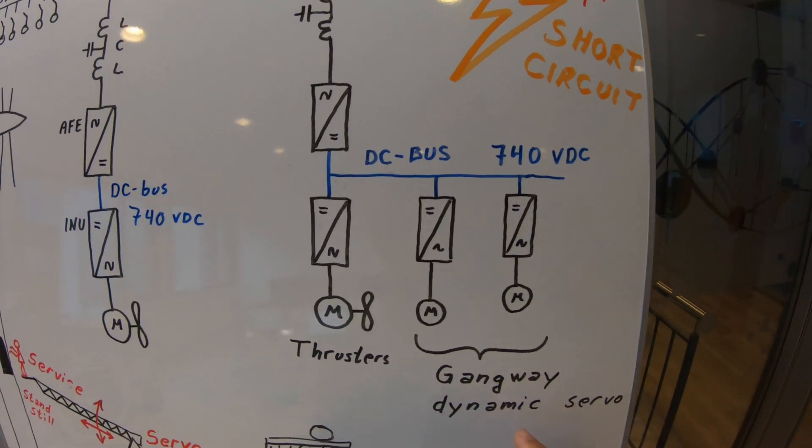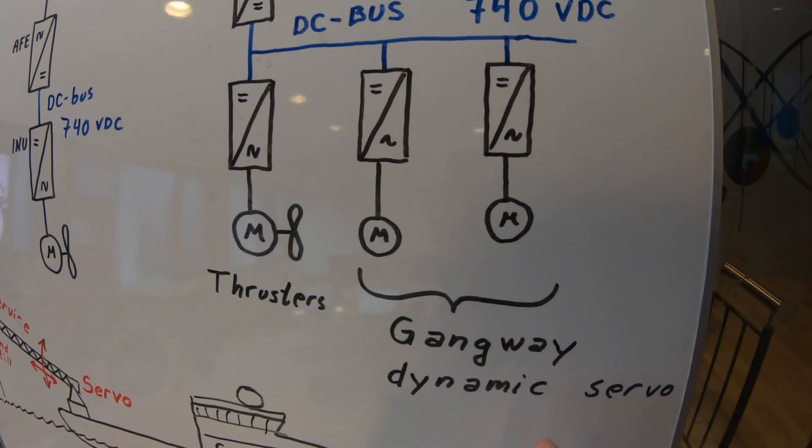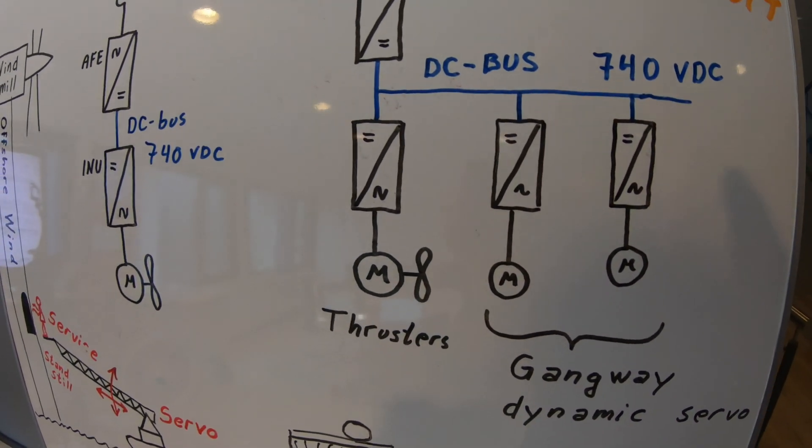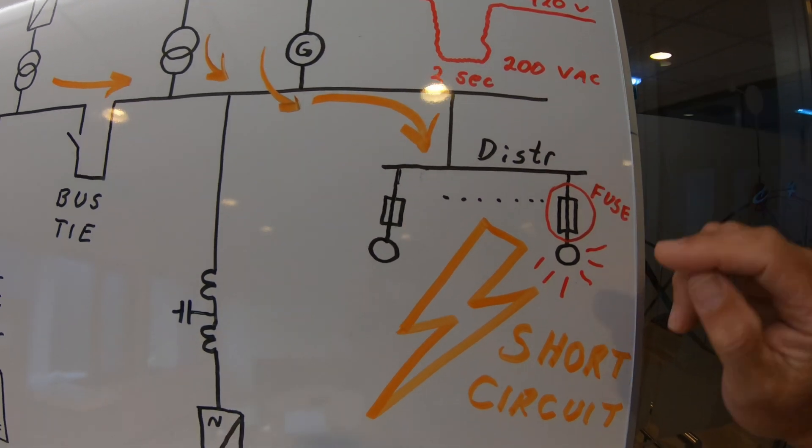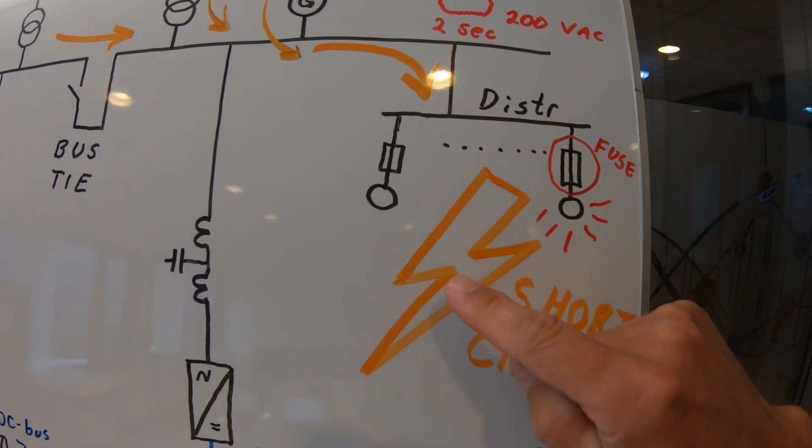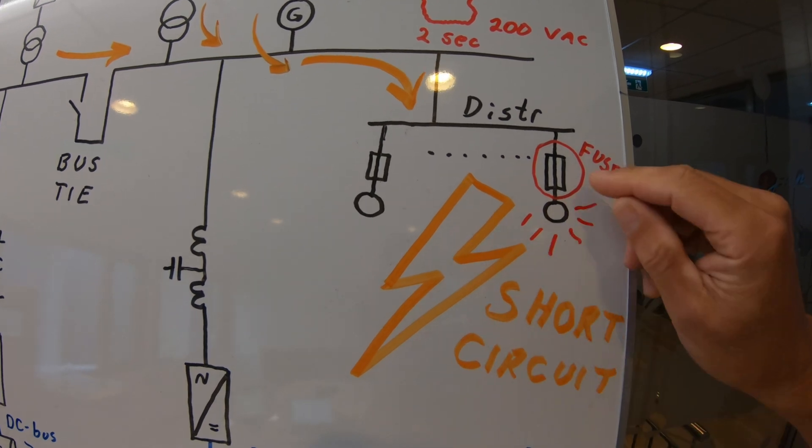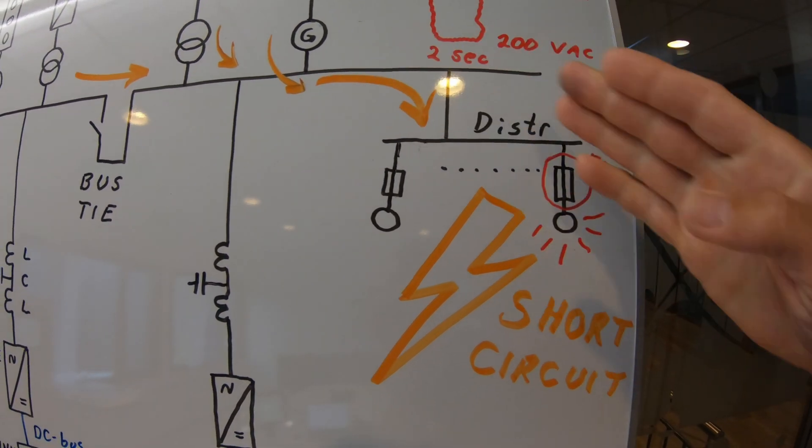And gangways, servo systems, are also fed from the same system. And then you can imagine what happens if the AC grid experiences a short circuit in its distribution. To blow this fuse, you need a lot of reactive current.